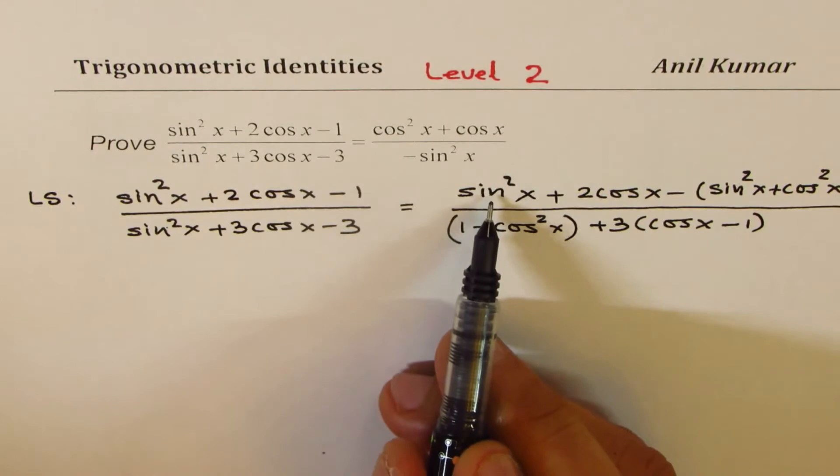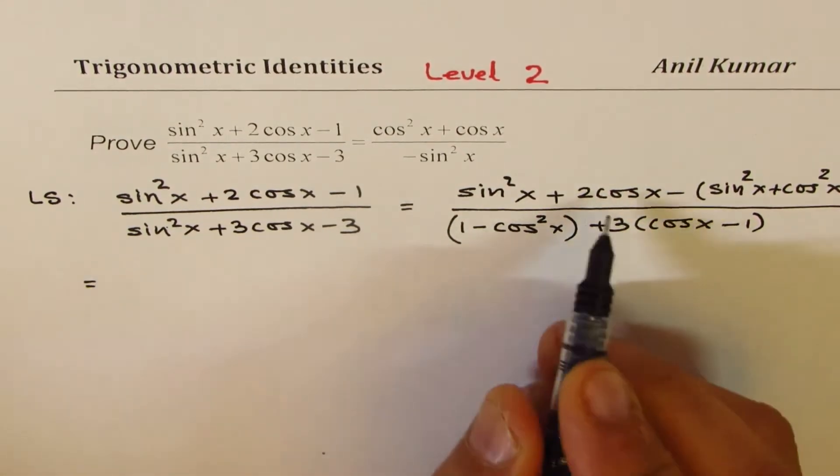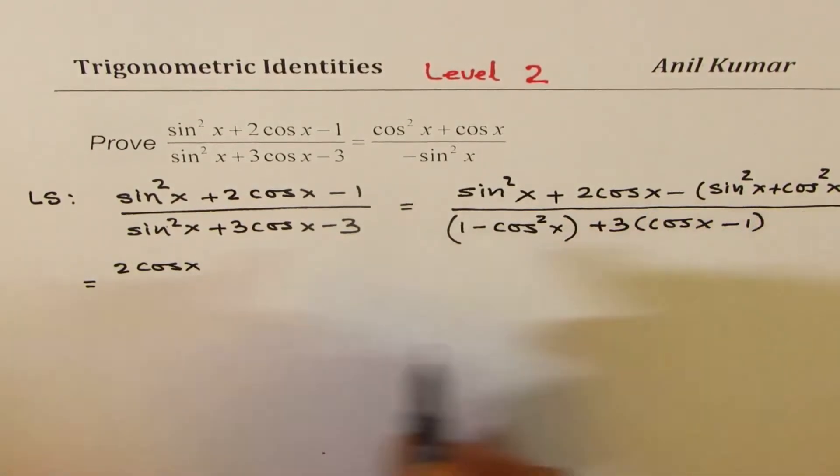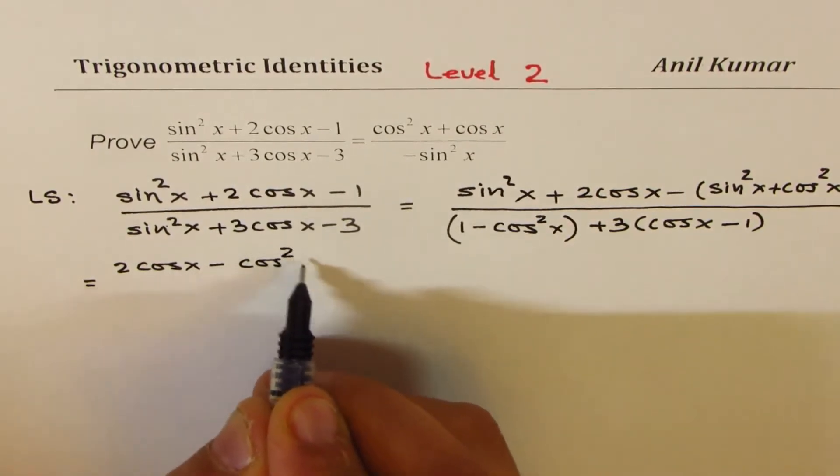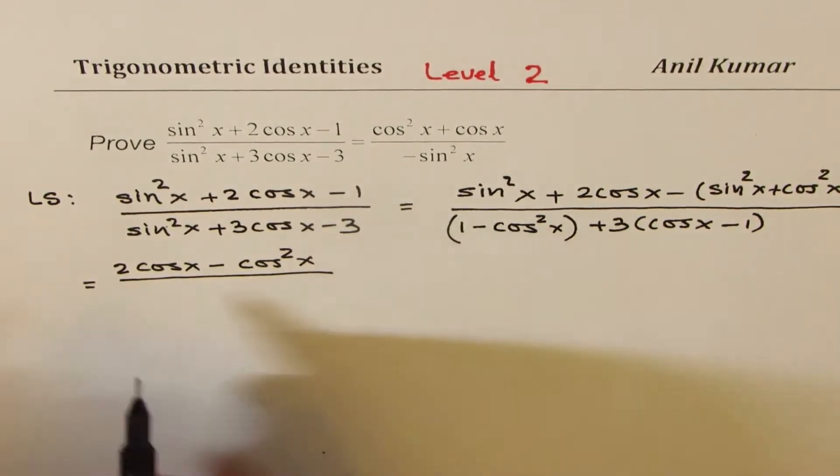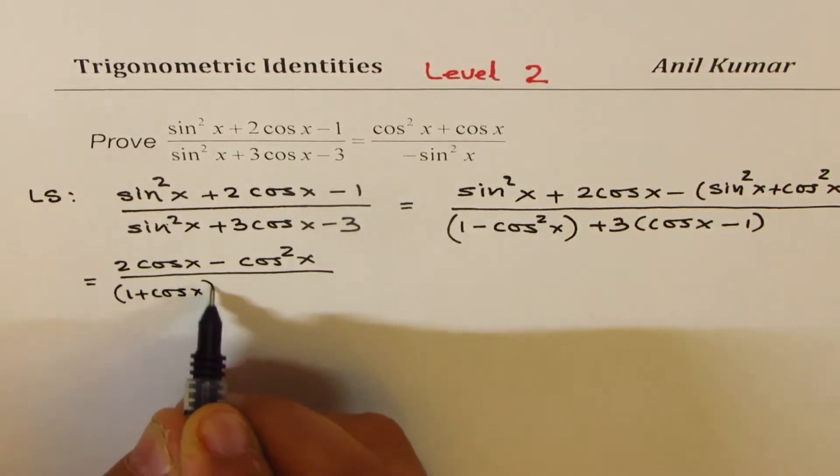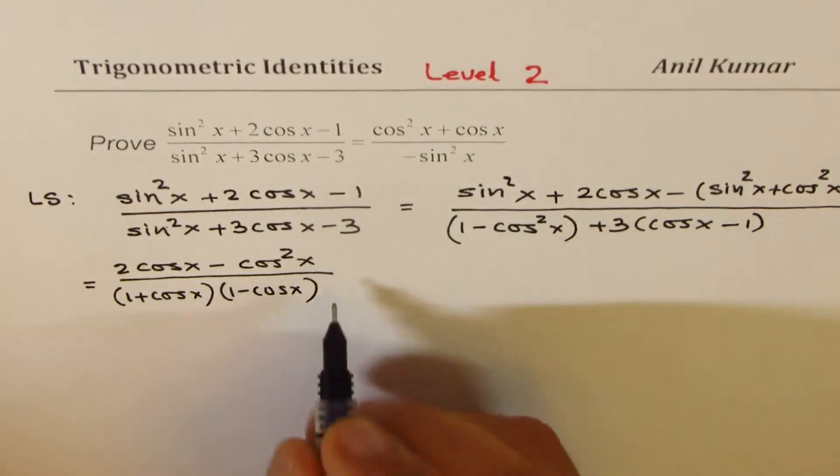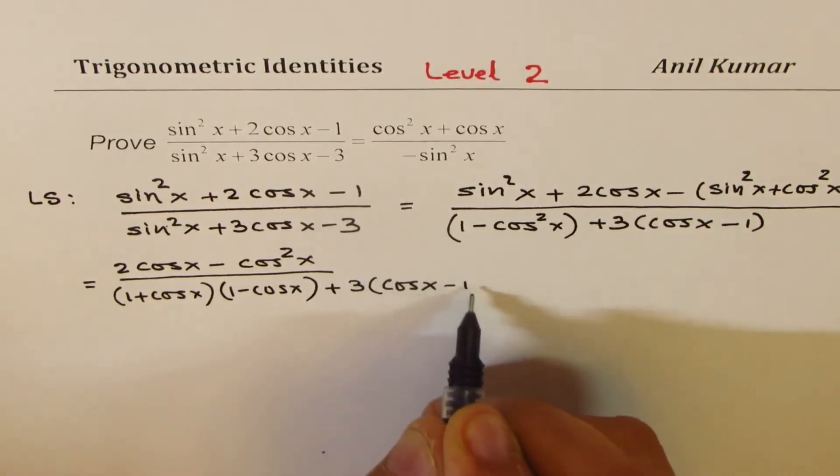Now in the numerator, sin²x - sin²x is 0. So what I get is 2cos x - cos²x divided by 1 - cos²x can be written as (1 + cos x)(1 - cos x). And the other term which we have is 3 times (cos x - 1).